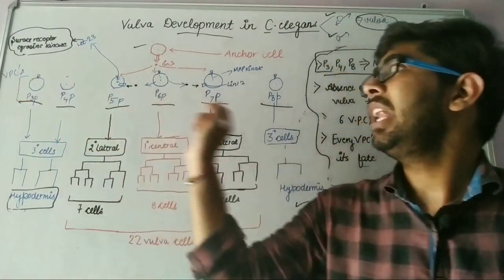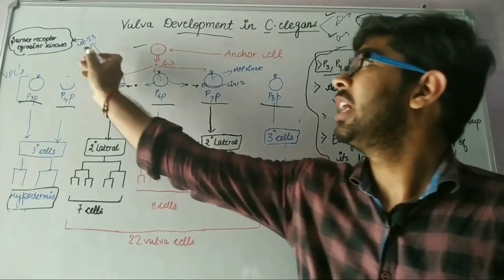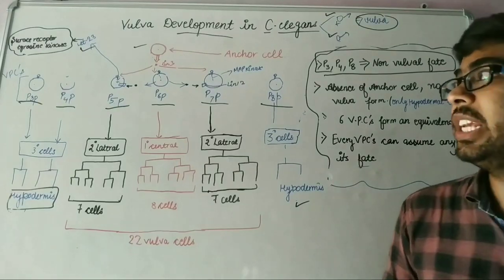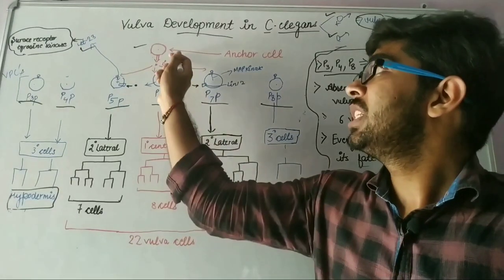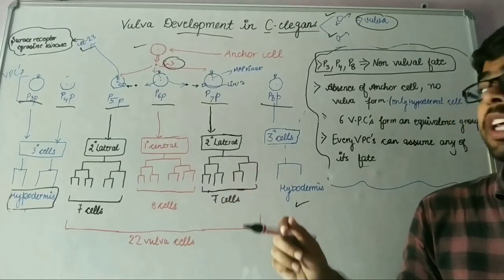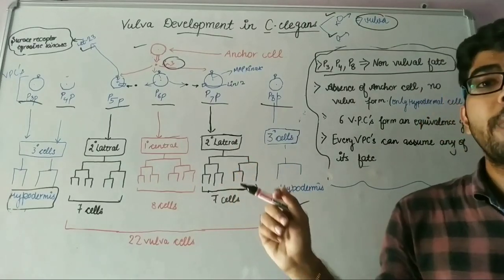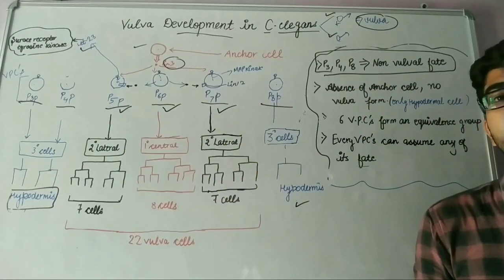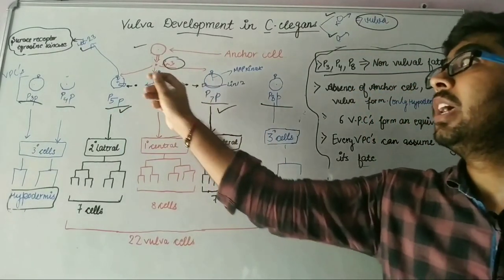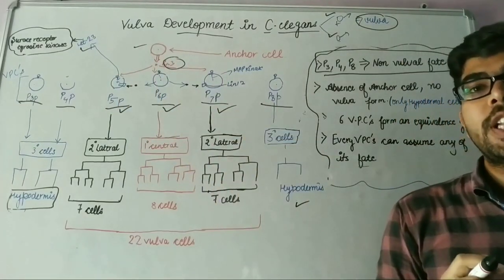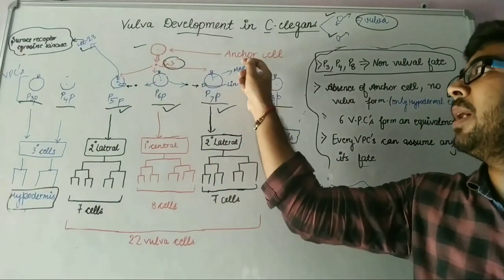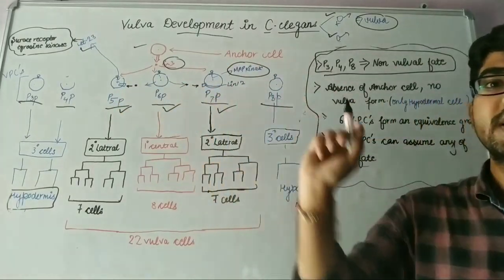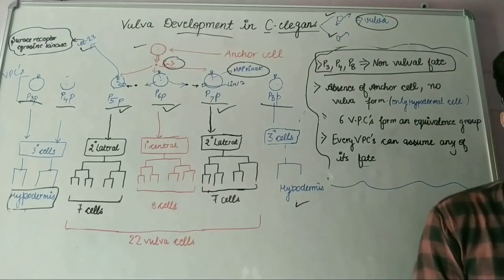Now, all of the VPC cells have LAT23 receptor, which is also known as surface receptor tyrosine kinase. Because of this concentration gradient, the LIN3 protein is found to interact only with P5P, P6P, and P7P vulva precursor cells. And when it interacts with LAT23 protein, then there is map kinase signaling occurring in P5P, P6P, and P7P vulva precursor cells.